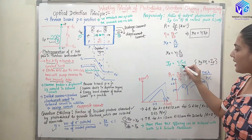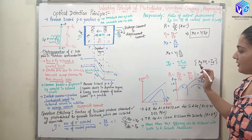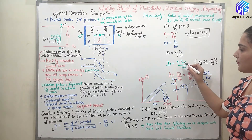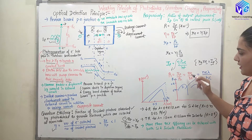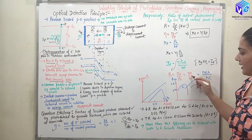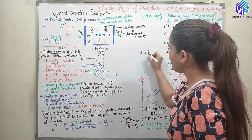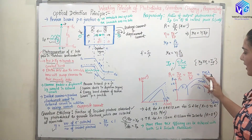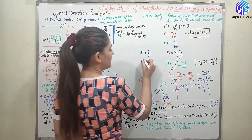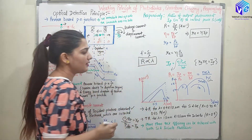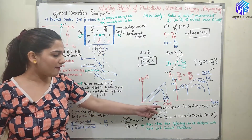Re was eta times P0 divided by Hf, multiplied by E. So Ip equals eta times P0 times E divided by Hf. Responsivity R equals Ip divided by P0, which gives R equals eta times E divided by Hf. Now we know that frequency f equals C divided by lambda, so substituting: R equals eta times E times lambda divided by H times C. From this we find that responsivity is directly proportional to lambda.